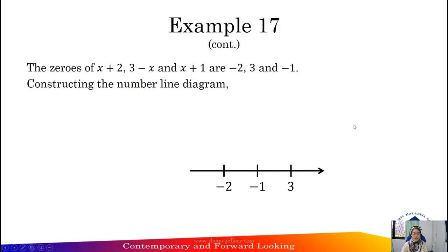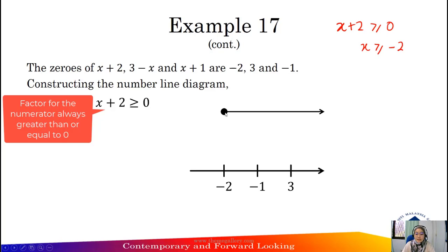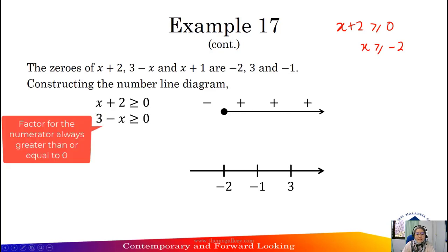Construct the number line diagram starting with negative 2, negative 1, and 3. These are the factors from the numerator and denominator. For x + 2 greater than or equal to 0: x is greater than or equal to negative 2, so from negative 2 to positive infinity — negative, positive, positive.